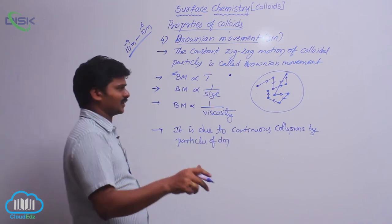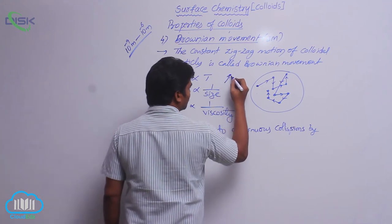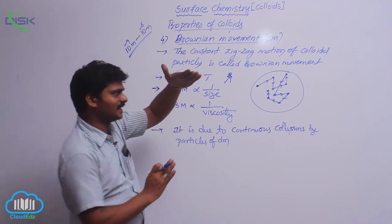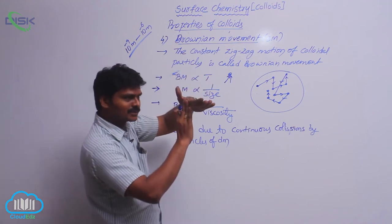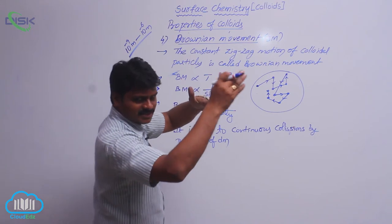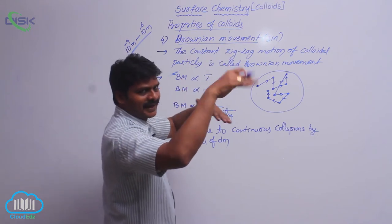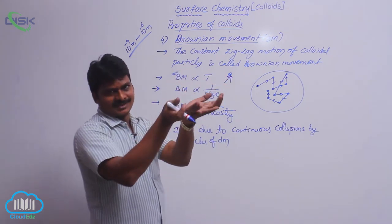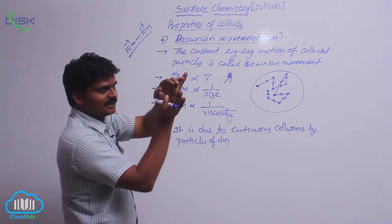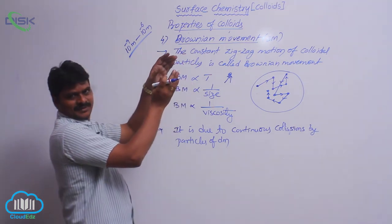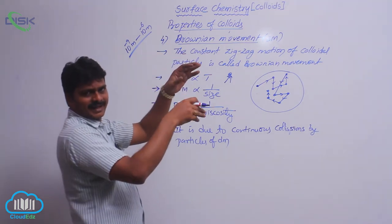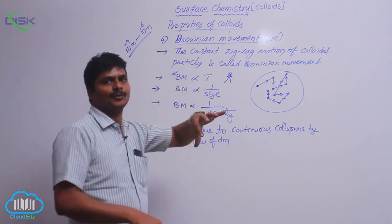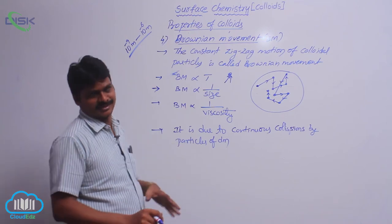Dispersion medium molecules continuously collide with the colloidal particles. Solvent molecules hit the Dp particle, it moves and changes its direction. As it tries to settle down, more solvent molecules hit it again and it moves in another direction. Continuously under collisions by solvent molecules, the particle moves in different directions — zigzag motion. This zigzag motion caused by continuous collisions by the dispersion medium is called Brownian movement.